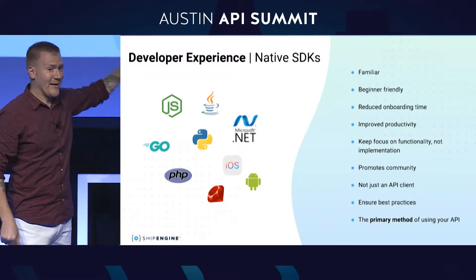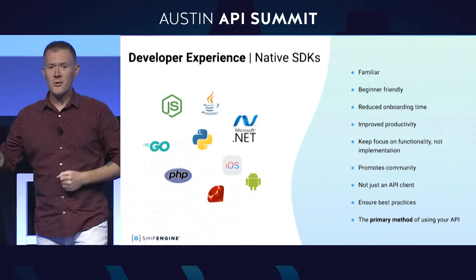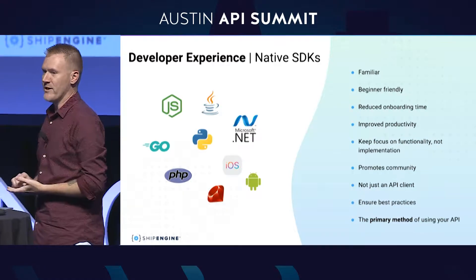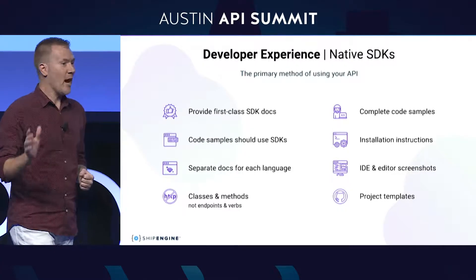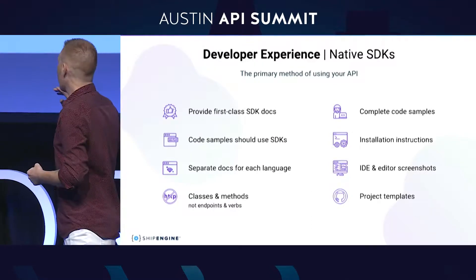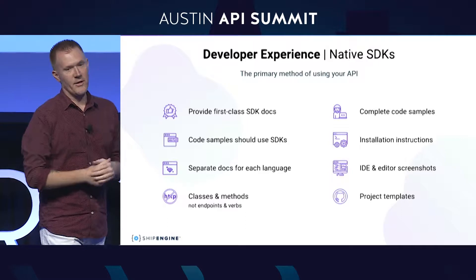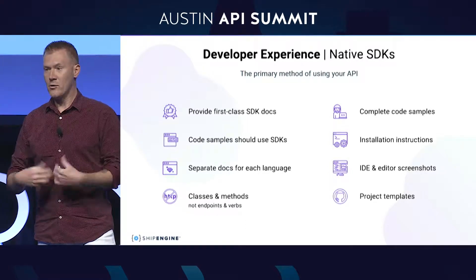There are a whole bunch of other reasons why SDKs are good, but this talk isn't about SDKs — it's about docs. What I want to talk about is that once you provide SDKs, they become the primary method of using your API. To that Python developer using your Python SDK, your product is not a REST API — your product is a Python library. He doesn't care that behind the scenes it uses a REST API. This changes how you write your documentation. All of a sudden, you're documenting not a REST API but a Python library, or a Java library, or a Go library. So you're not documenting HTTP endpoints and verbs — you're documenting classes and methods.